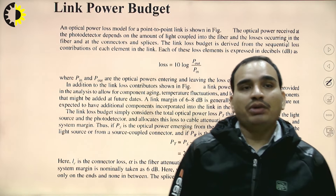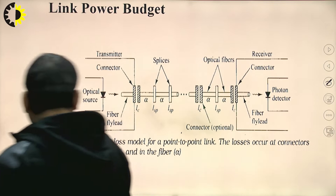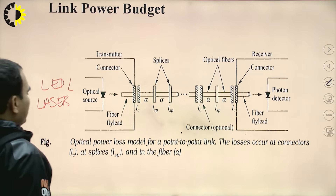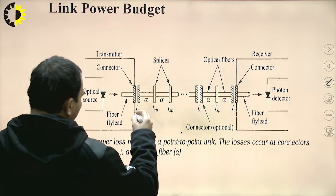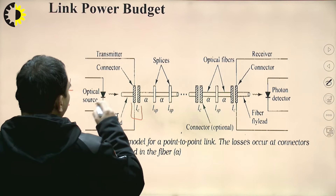An optical power loss model for a point-to-point link is shown in the figure. We have the optical source, which may be an LED (light emitting diode) or a laser (light amplification by stimulated emission of radiation). There is a connector, which may include a lens to concentrate the optical power into the fiber core.